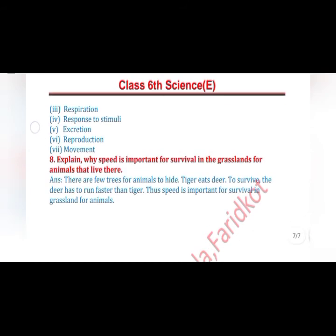Our eighth question: explain why speed is important for survival in grasslands for animals that live there. The answer is: there are few trees for animals to hide. A tiger eats deer to survive, so the deer has to run faster than the tiger. Thus, speed is important for survival in the grassland.